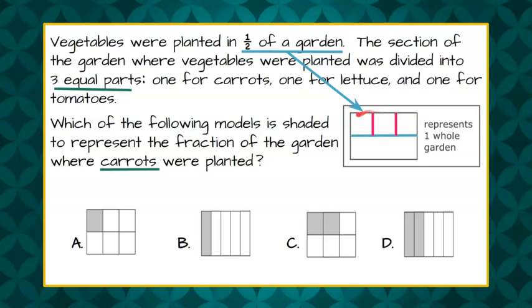So half of our garden was for vegetables and in the vegetable section there were three equal sections - carrots, lettuce, and tomatoes. So let's highlight where we had just the one section of the three equal parts for carrots and now we have that shaded in.